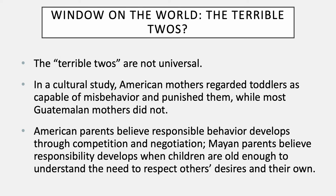The terrible twos are not universal. In a cultural study, American mothers regarded toddlers as capable of misbehavior and punishment, while most Guatemalan mothers did not. American parents believe responsible behavior develops through competition and negotiation, while Mayan parents believe responsibility develops when children are old enough to understand the need to respect others' desires and their own. Culture does play a role in how two-year-olds develop, and no specific behavior is universal.